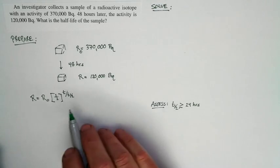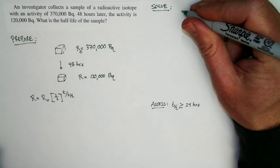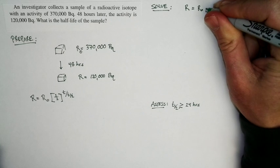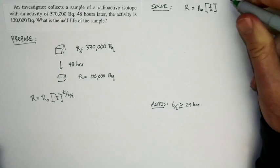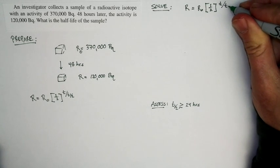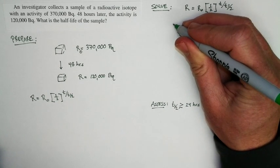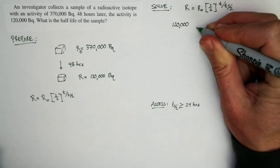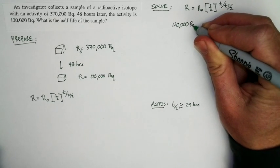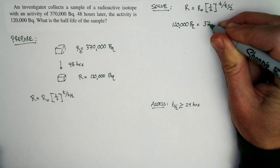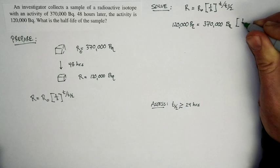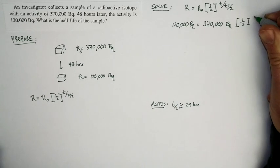So I'm just going to go ahead and rewrite this equation, but put in values, okay? So my equation is this: R is equal to R₀ times one-half to the t over t₁/₂. The activity at 48 hours is 120,000 Becquerels. The initial activity was 370,000 Becquerels.